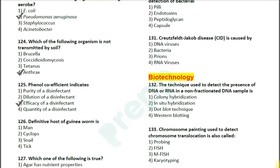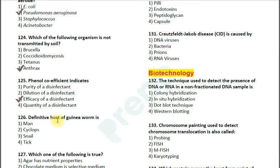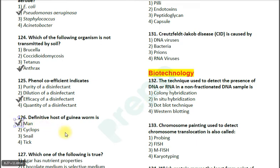Question number 126: The definitive host of guinea worm is — option 1: man; option 2: Cyclops; option 3: snail; option 4: tick. This is a simple question. The correct answer is option 1 — man. The scientific name of guinea worm is Dracunculus medinensis.